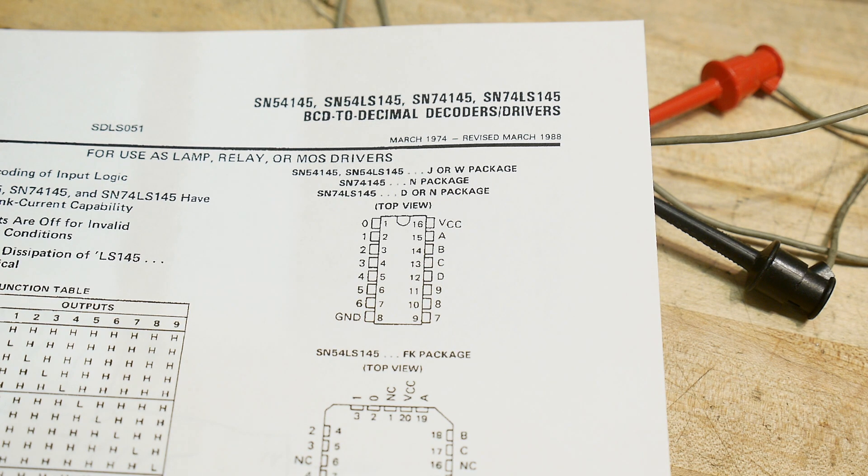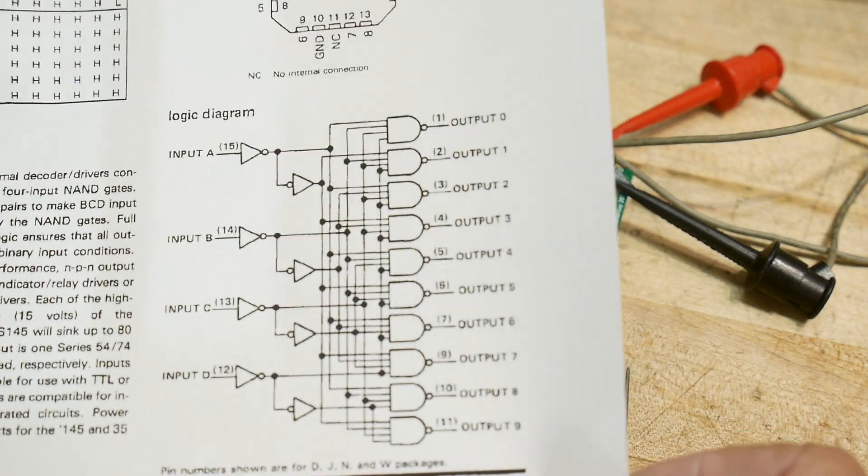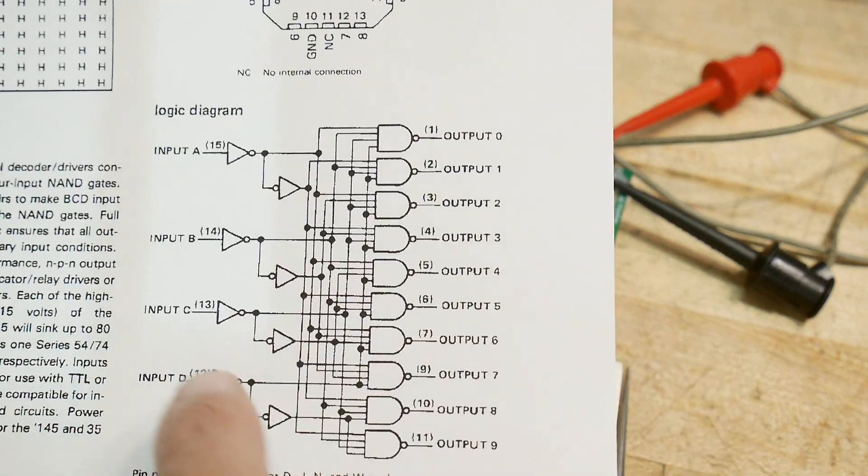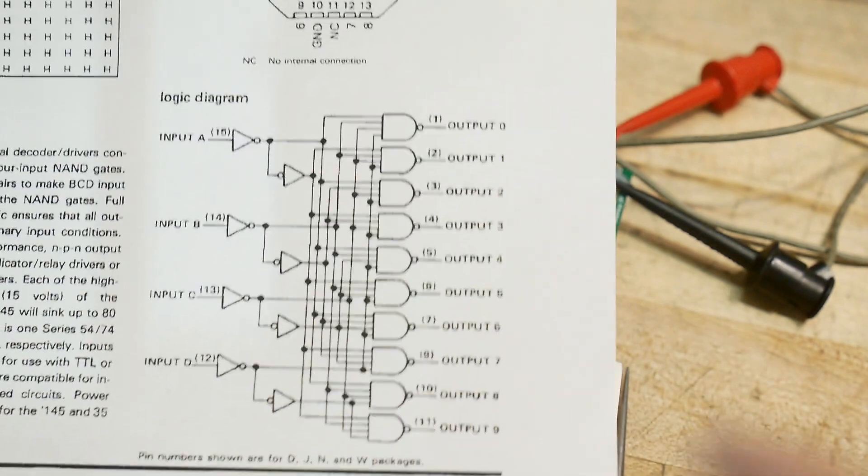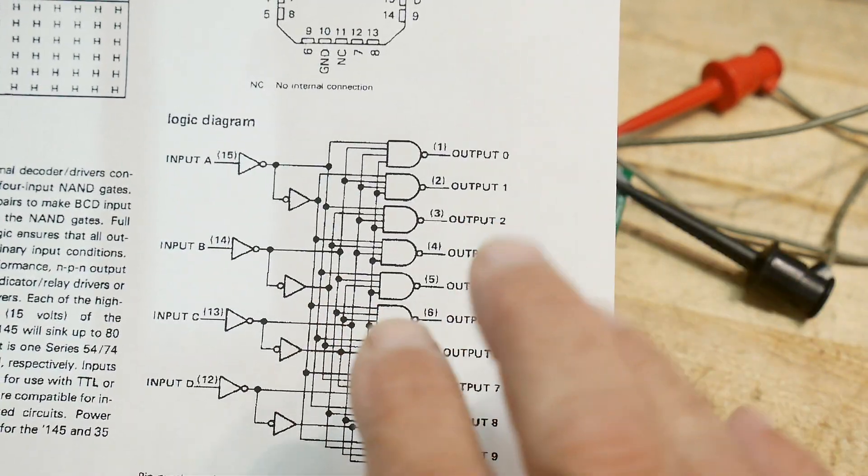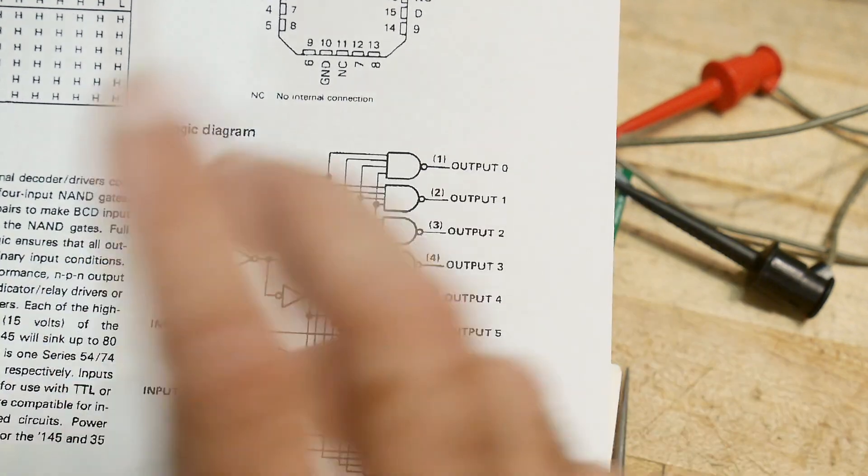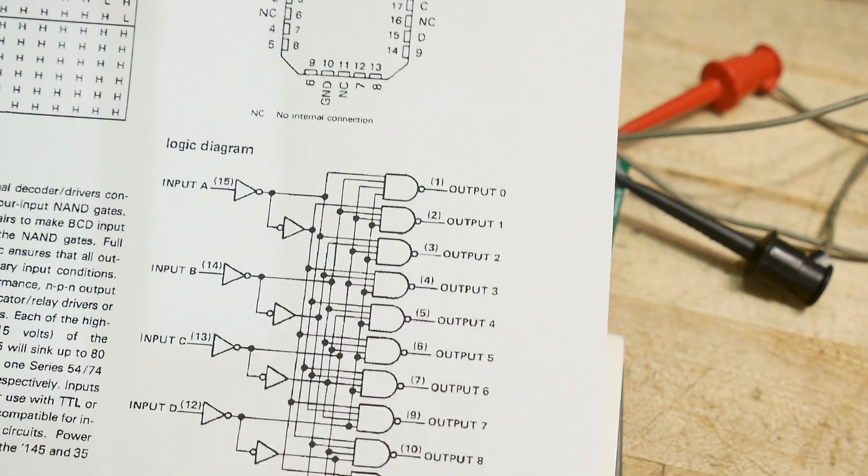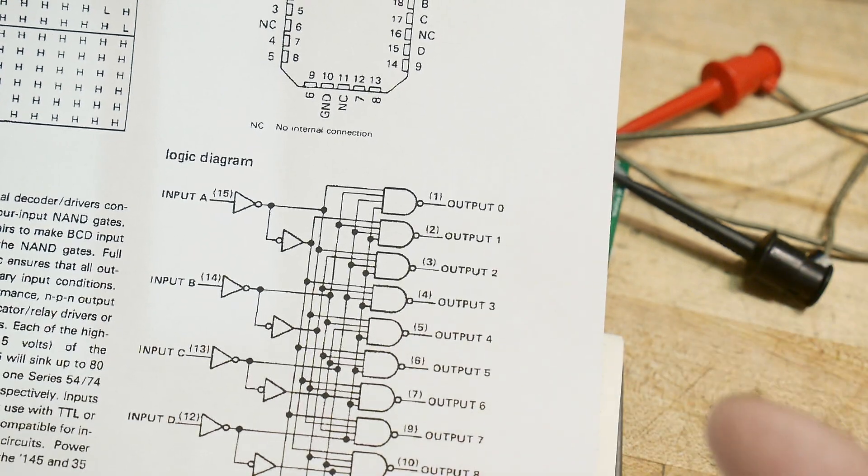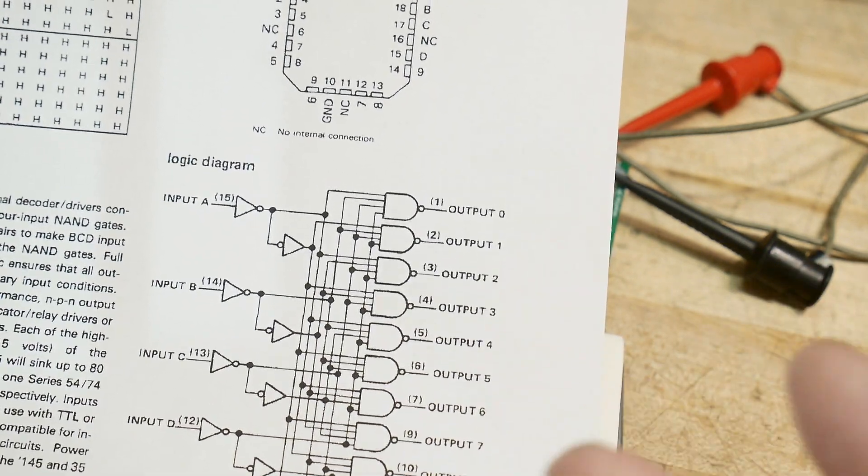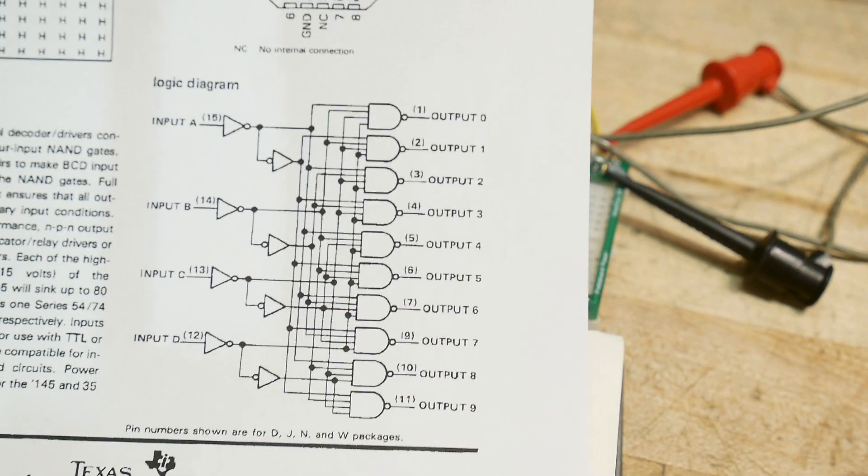All right, so the way that it works is that you give it a BCD input. So what is binary coded decimal? It's just binary, so you know, zero zero one zero one zero zero one one. It's regular binary although it only goes from zero to nine. It's only valid from zero to nine and then anything above that it doesn't make any sense.